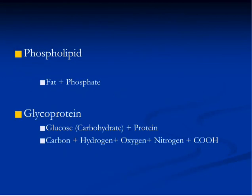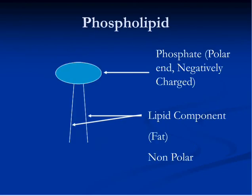Phospholipid means phosphate molecules with fat. Glycoprotein means glucose or carbohydrates attached to proteins, so a glycoprotein contains carbon, hydrogen, oxygen, nitrogen, and an acid group. The cell membrane is the outer lining of a cell made up of a double layer of phospholipids. Proteins and carbohydrates are also present, for example in the form of glycoproteins and carbohydrate chains.